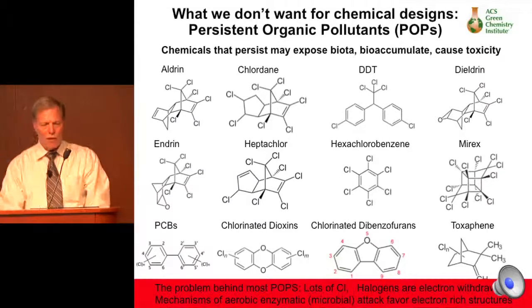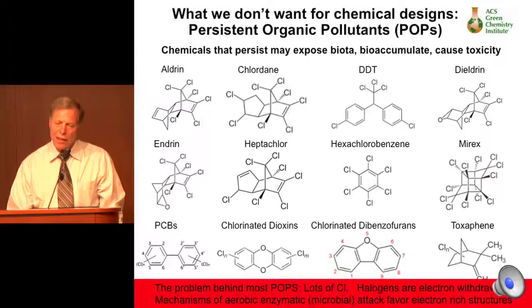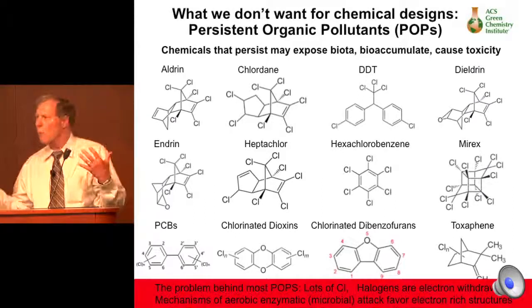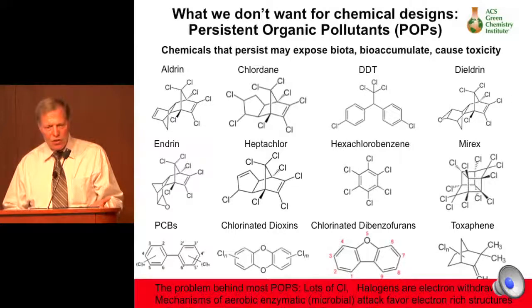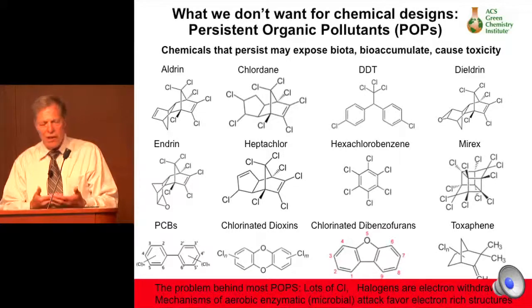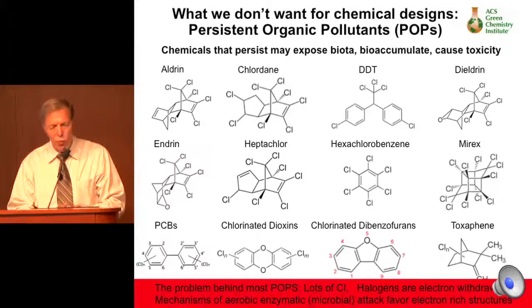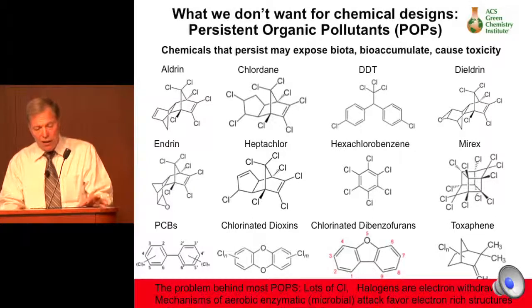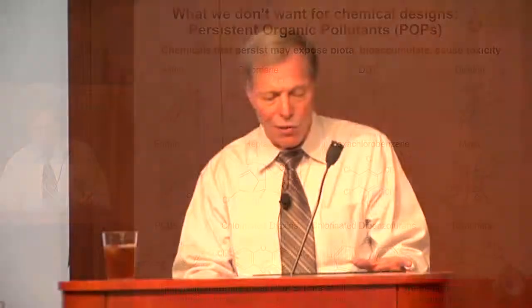So what don't we want in chemicals? These are persistent organic pollutants, and there are a number of POPs conventions where these compounds are designated for bans — not a good list to be on. One thing you notice is a lot of these are not necessarily natural structures, and there's lots of chlorine. Chlorine is very electron-withdrawing, and mechanisms of aerobic enzymatic microbial biodegradation favor electron-rich structures — so those are inherently opposing. That's the primary reason POP compounds are persistent.